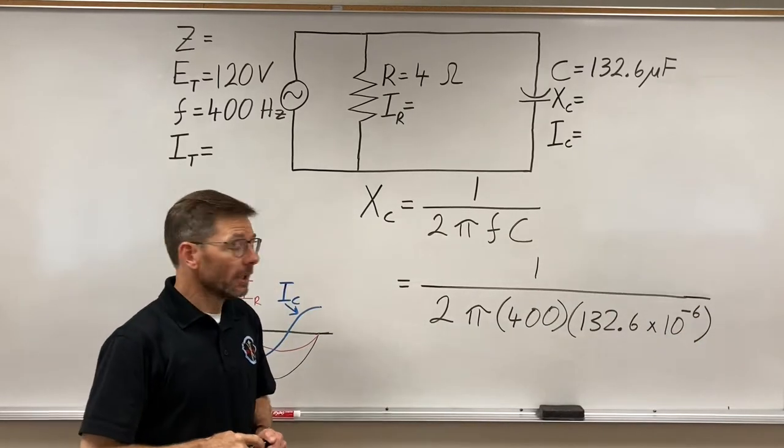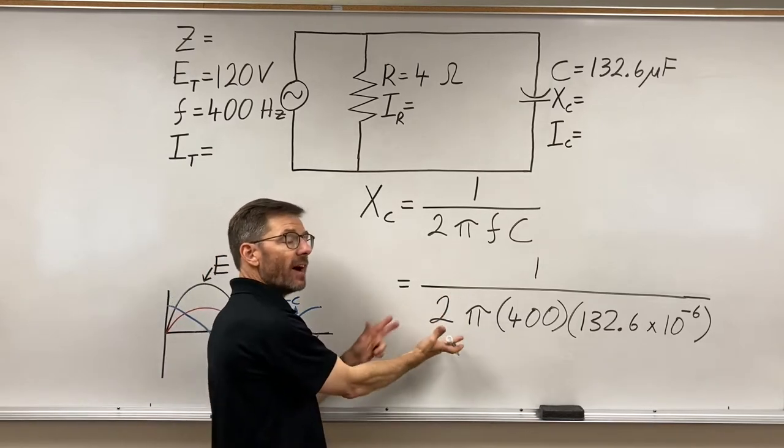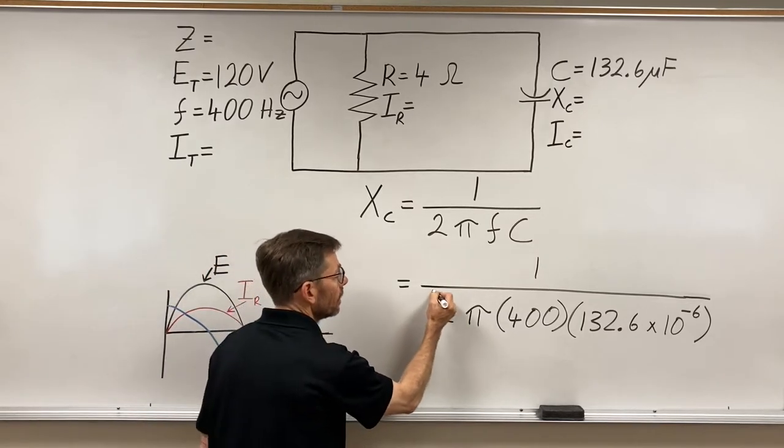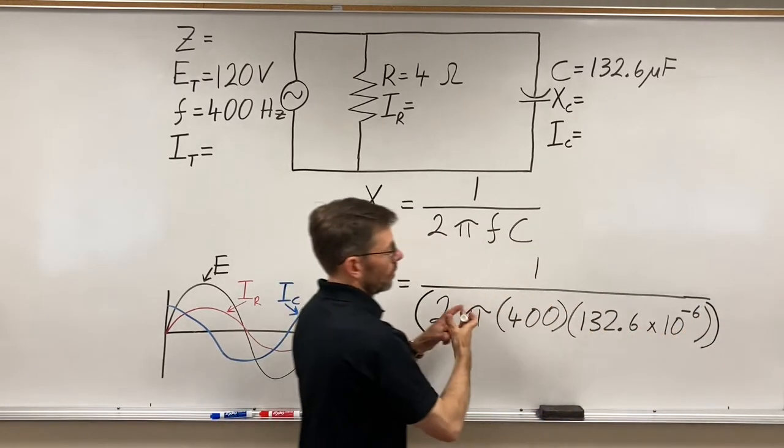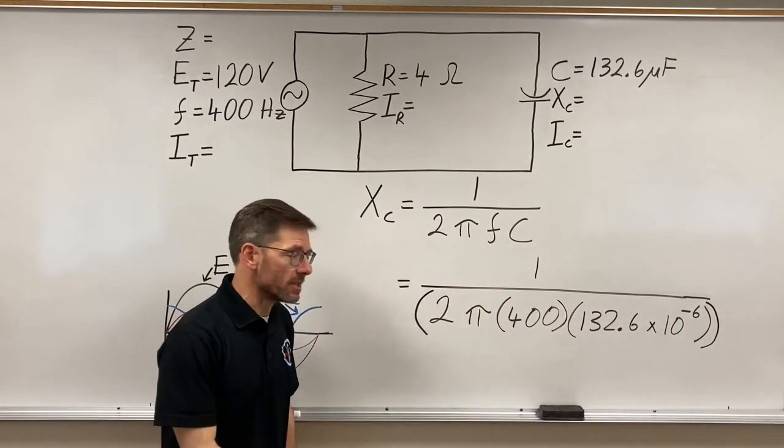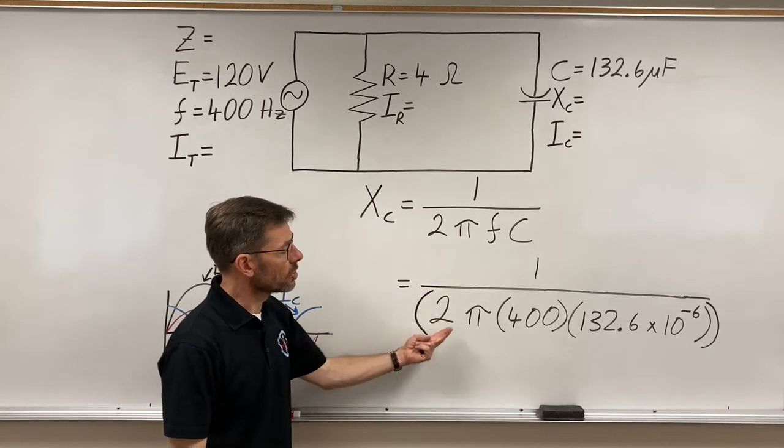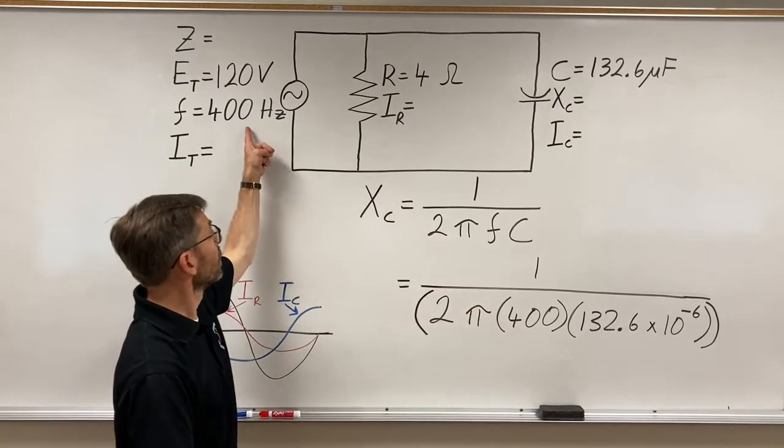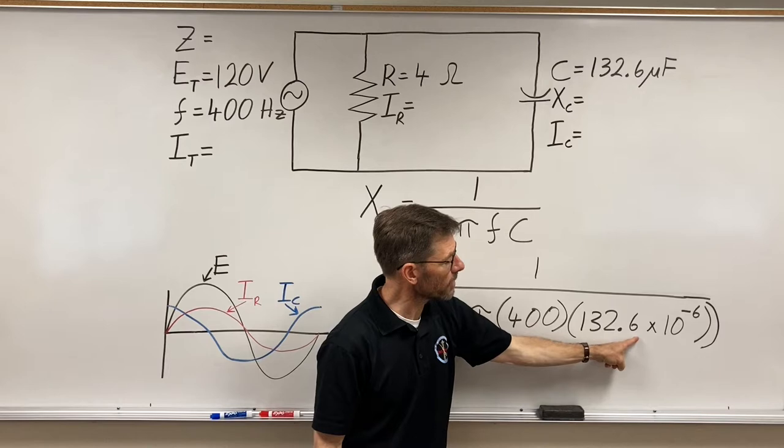Long formula, we can do it. Now we want to make sure again that when we're dividing by a quantity, we put that whole quantity in parentheses. So 1 divided by parentheses, 2 pi, double check your frequency. Here we've got 400 hertz times 132.6,